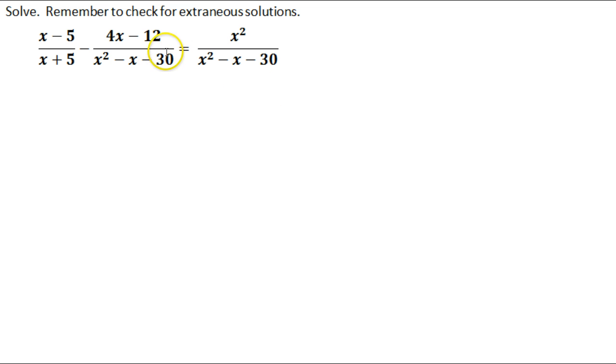So when we're factoring these, we need to determine two numbers that multiply together to give us negative 30, but add together to give us negative 1, this b value here. So negative 30 and negative 1, that would be a negative 6 and positive 5.